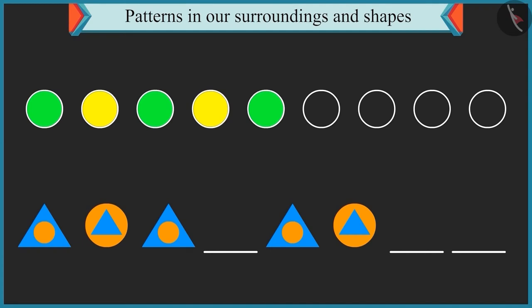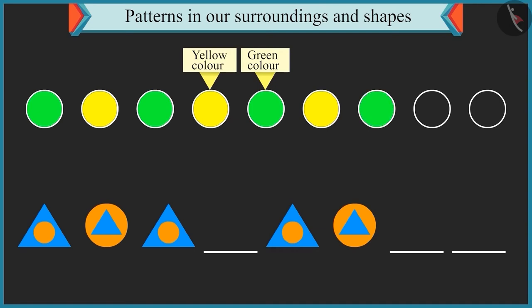Yes. The first circle is filled with green color. The second circle is filled with yellow color. And the third circle is filled with green color. Yes. The yellow and green colors are repeated in the next circles. You are right. Now if you fill the next circles with yellow and green color and repeat it, the pattern will be complete.